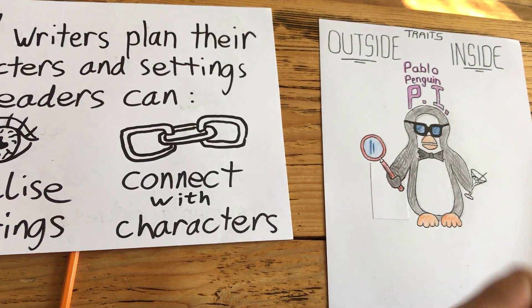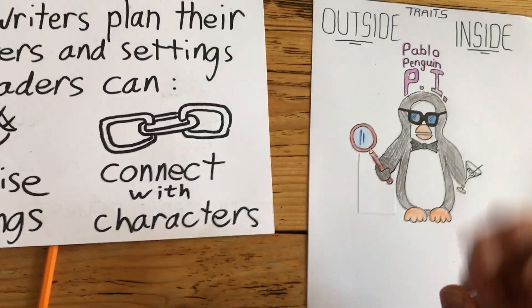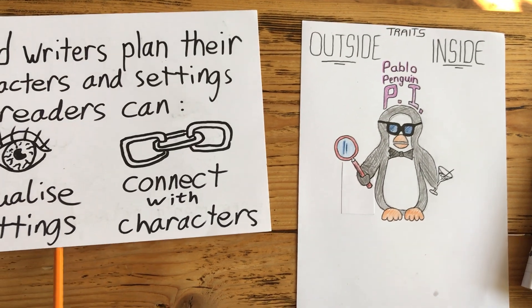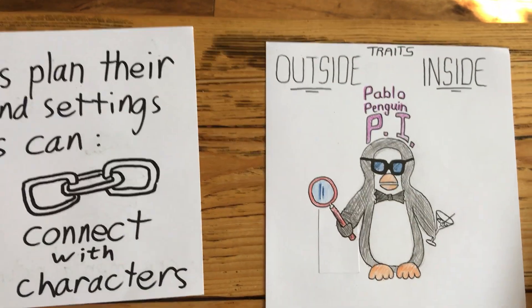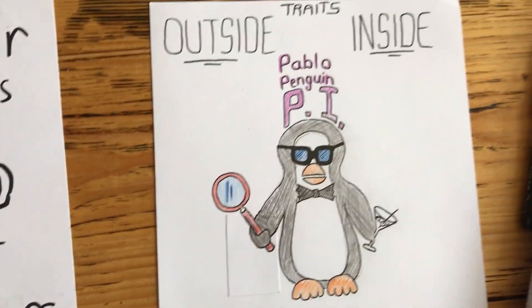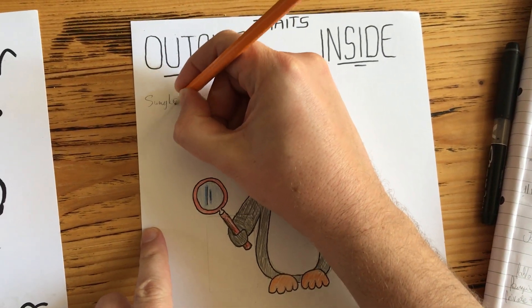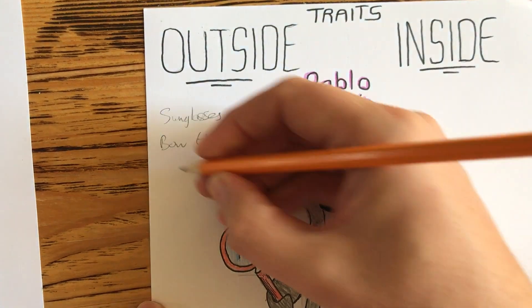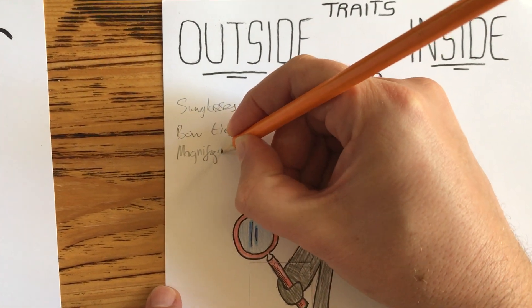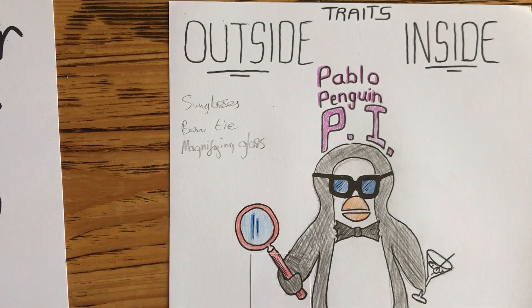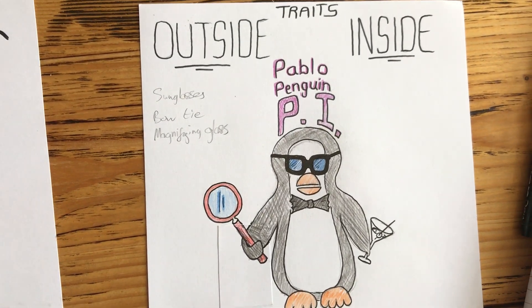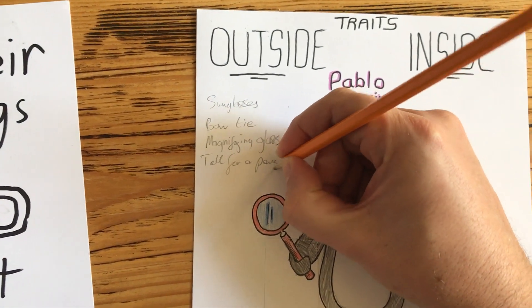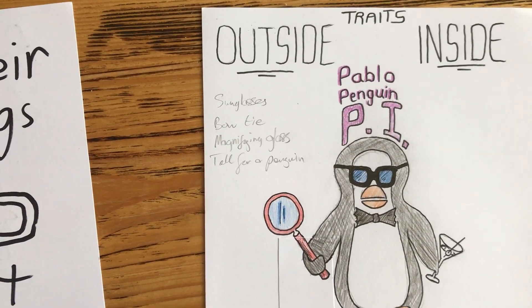First thing to do when you have a character is to describe them. As you remember from earlier in the year, you've got outside traits and inside traits. Some of the outside traits of Pablo Penguin PI — you can see them in the picture: he's got sunglasses, a bow tie, a magnifying glass, he's quite tall for a penguin, and he's quite handsome amongst the penguin community.